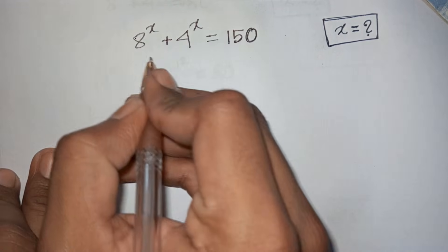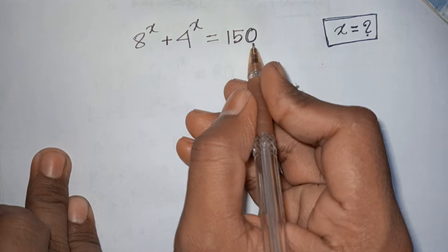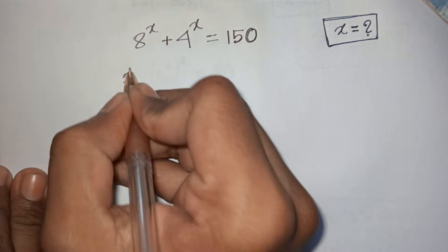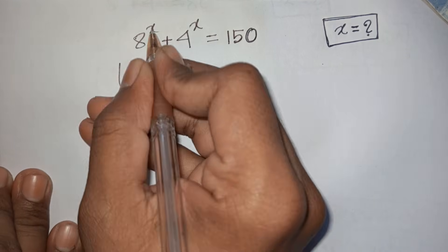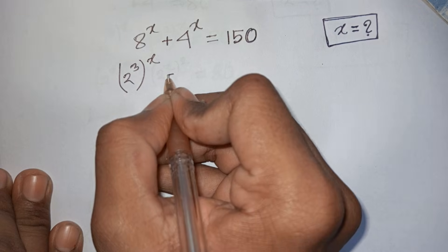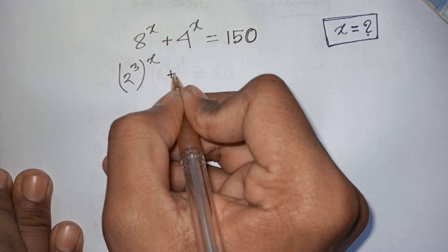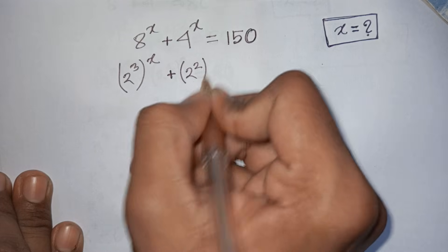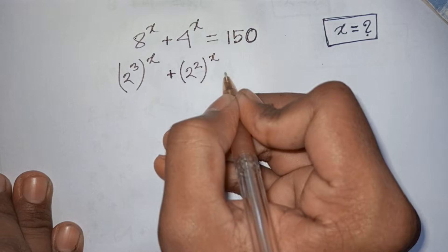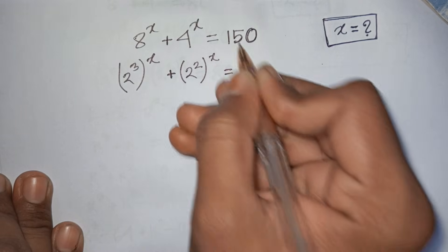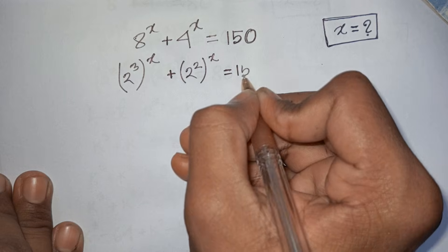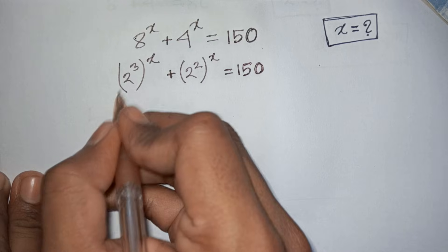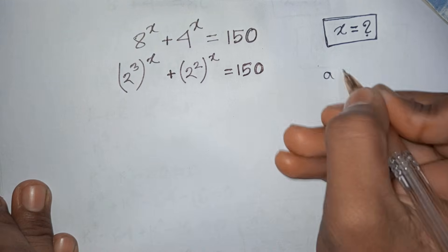How to solve 8^(πx) + 4^(πx) = 150, find the value of x. So 8^(πx) is the same as (2³)^x, plus 4^(πx) is the same as (2²)^x, is equal to 150. In the next step, we apply the exponential rule that a^(m·n) = a^(n·m).